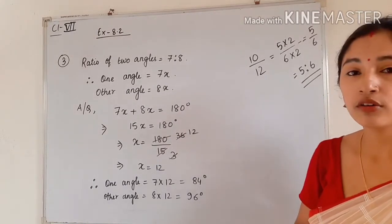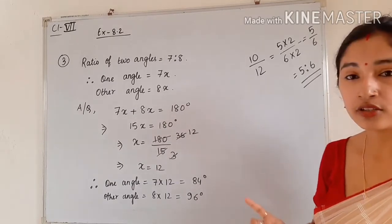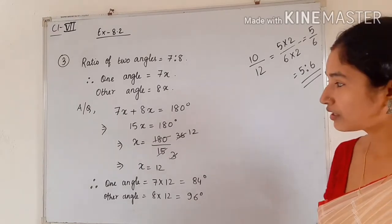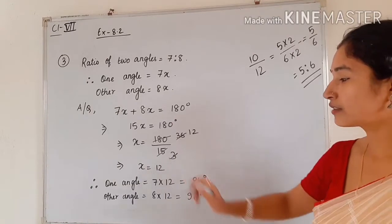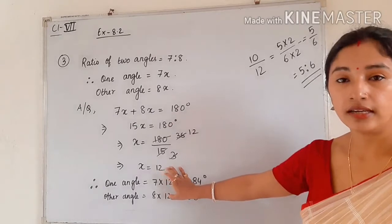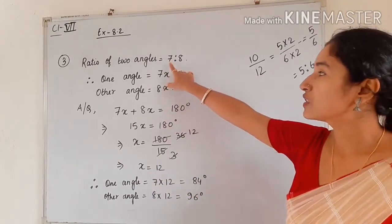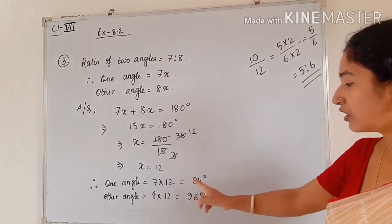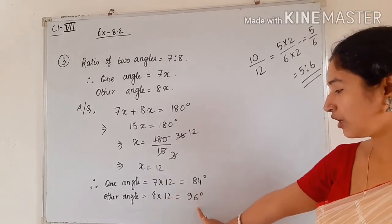According to the condition, the sum of the two angles equals 180 degrees. So 7x plus 8x equals 180 degrees. After solving, we get x equals 12. Remember, this is not in degrees — it is just the value we multiply with 7 and 8 to get the angles. The first angle is 7 into 12, that is 84 degrees, and the second angle is 8 into 12, that is 96 degrees.